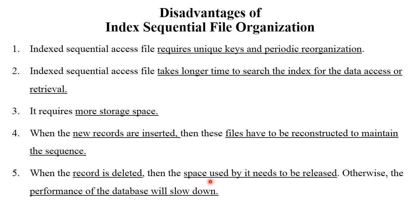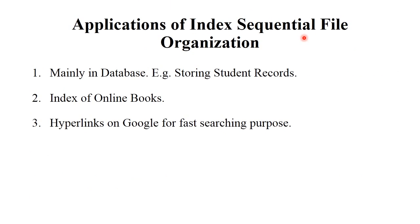These disadvantages are overcome in the next type of file organization. Applications of index sequential file organization include: storing student records in a database, the index of online books where clicking the index takes you to a particular page, and hyperlinks on Google for fast searching purposes. This is all about index sequential file organization — keep practicing. Thank you.